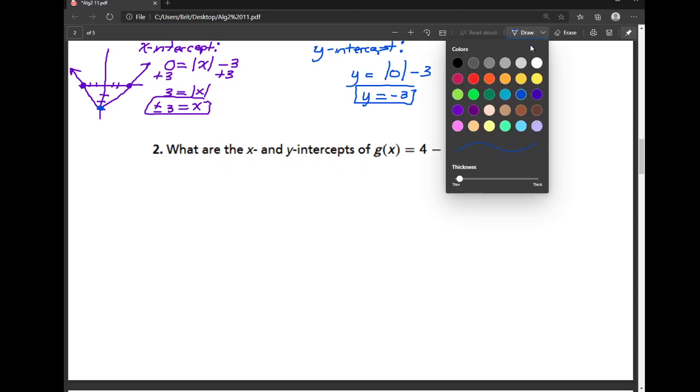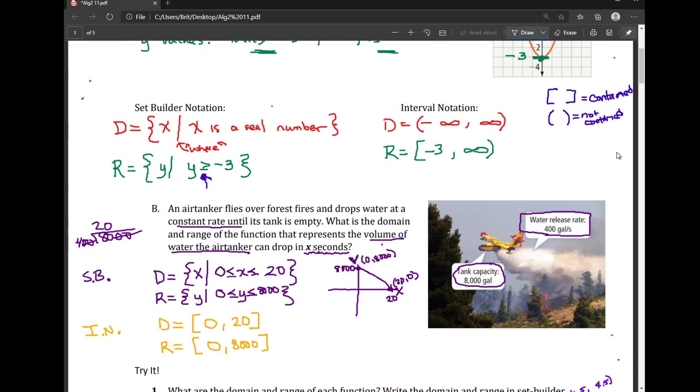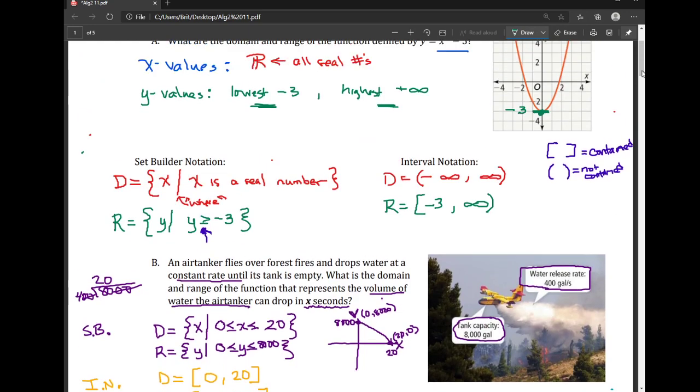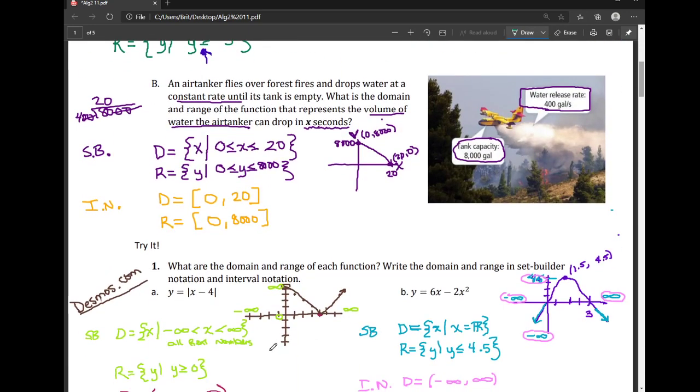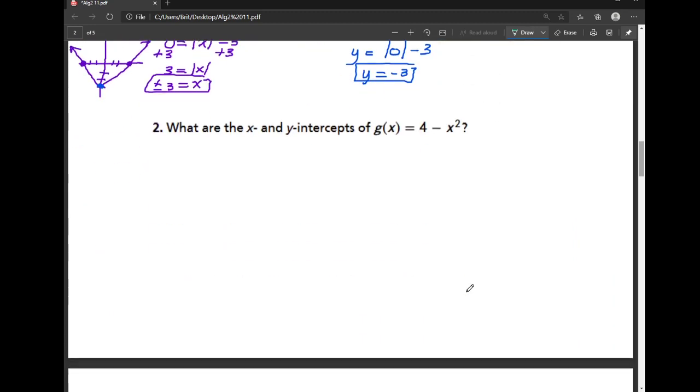All right, so now this is another example of it. So we're getting a little spicy here with function notation. Okay, don't freak out. If you see something that's like f of x or g of x right here, scribble it out and call it a y. And you're all good, okay?